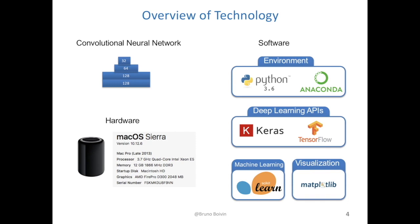Everything was run inside a Python 3.6 Anaconda environment. The network was implemented using Keras and TensorFlow APIs. Given the small number of images provided by the Broad, a four-fold cross-validation strategy was used to measure performance, and the scikit-learn package was used for that.